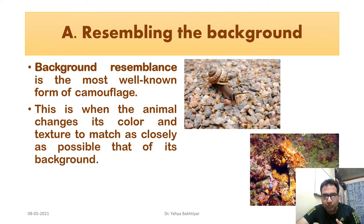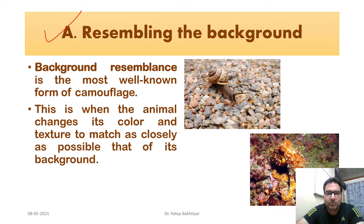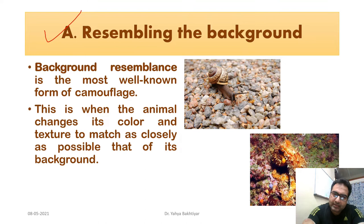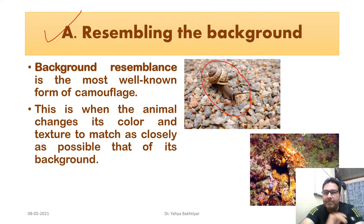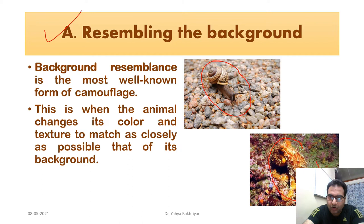One mechanism of camouflage is background resemblance, which is the most well-known form. This is when the animal changes its color and texture to match as closely as possible to the background. Here in this picture we are seeing an example where the organism has matched itself to the background. Here we see the octopus which has closely resembled the background.